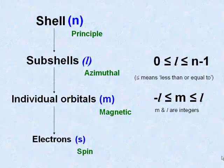A shell can be divided into subshells, which can further be divided into individual orbitals, where there is a high probability of finding an electron.